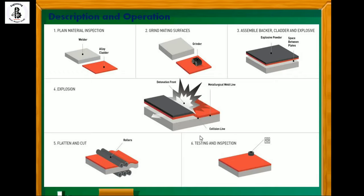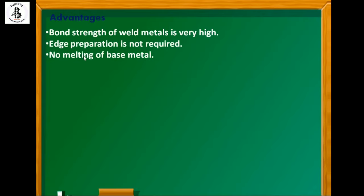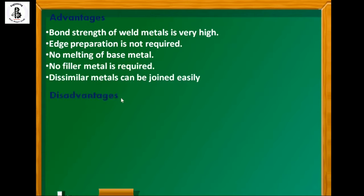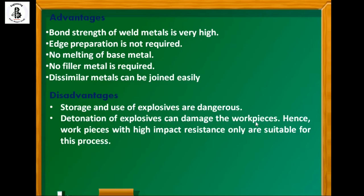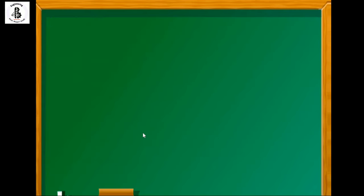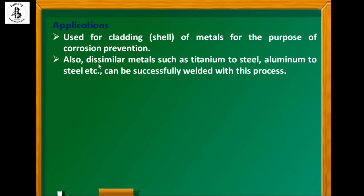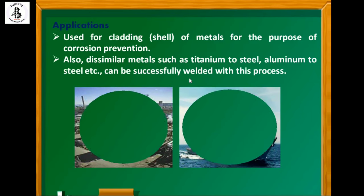Some advantages of explosive welding: bond strength of weld metals is very high; edge preparation is not required; no melting of base metal; no filler metals are used; dissimilar metals can be joined easily. Some disadvantages: storage and use of explosives are dangerous; detonation can damage the workpiece, so only workpieces with high impact resistance are suitable; not suitable for thick plates as they require high detonation velocities.